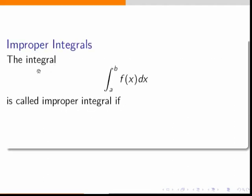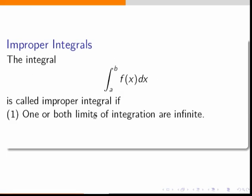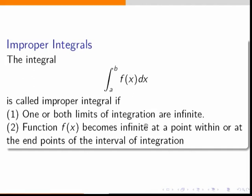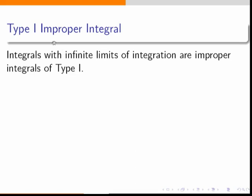The integral ∫ₐᵇ f(x) dx is called an improper integral if one or both of the limits of integration are infinite, or if the function becomes infinite at a point within or at the endpoint of the interval. In the last lecture we covered type 1 improper integrals — integrals with infinite limits of integration.